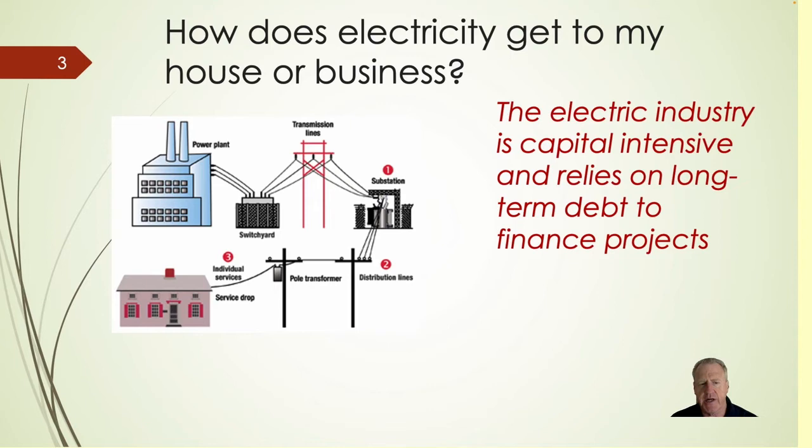You can see the process in this diagram: power plant, switchyard, substation, transmission lines, another step-down substation, down to distribution level, down to the pole outside your house — or perhaps you have underground power lines — and then the transformer steps it down into that service drop, and it ends up in your home or business.